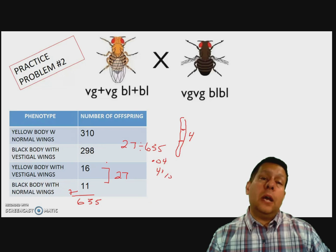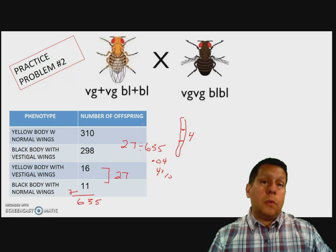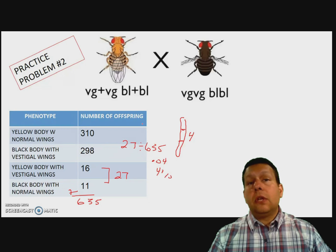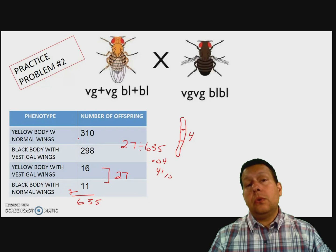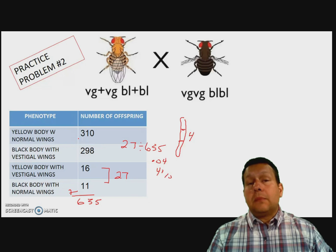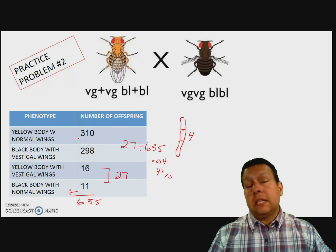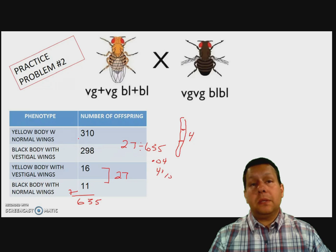I hope that helped with figuring out whether or not traits are on the same chromosome. If you look at the next screencast, I'm going to show you how to sequence them so that you can find out where all of these traits are on a chromosome. It's called mapping genes. I hope that helped — I'll see you next time.